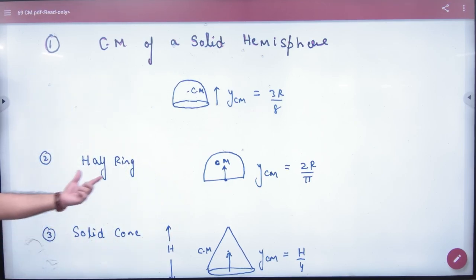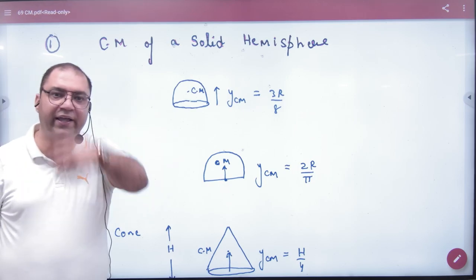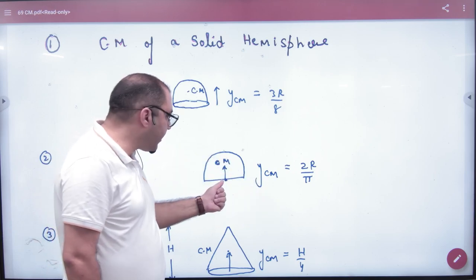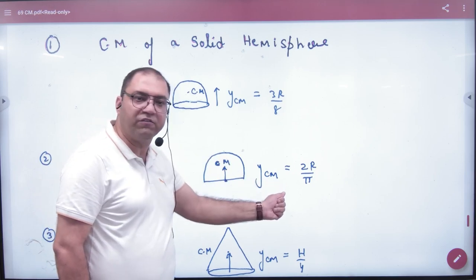The second formula is half ring. If there is a complete ring, the center of mass is center. If there is a half ring, if there is a semicircle, if there is a center of mass here, at a distance of 2r by π.